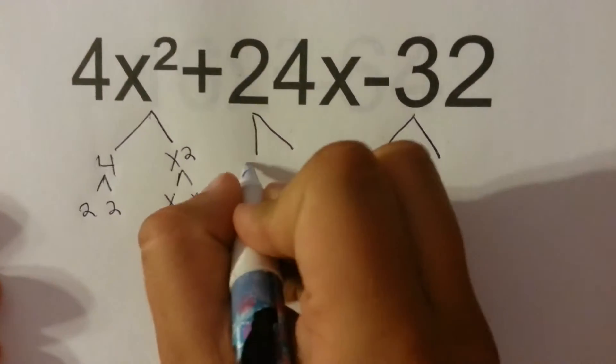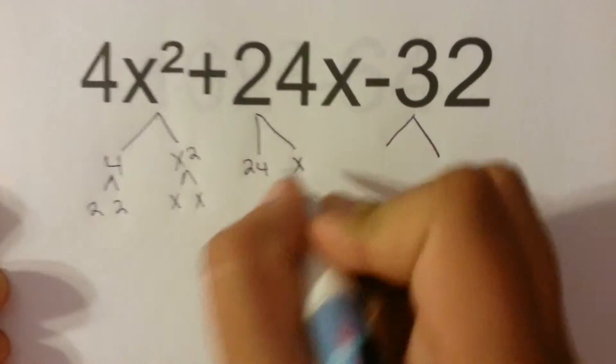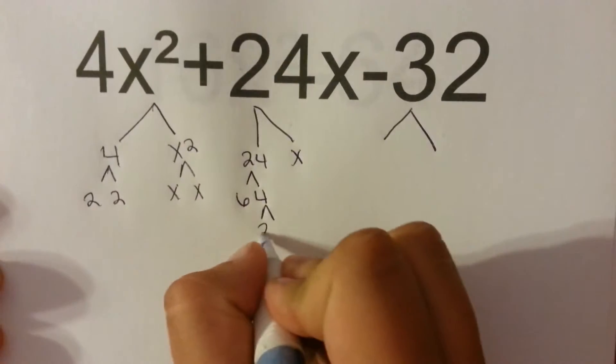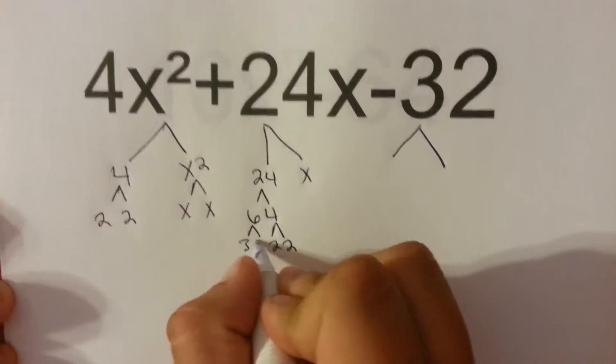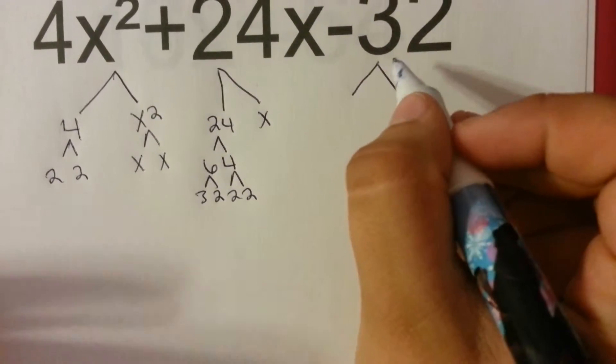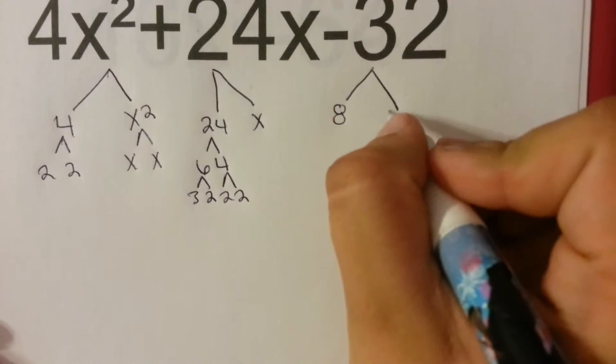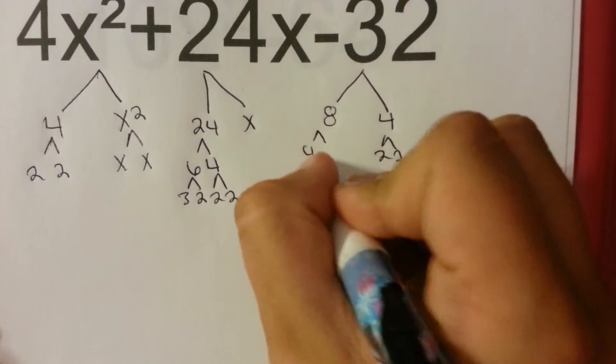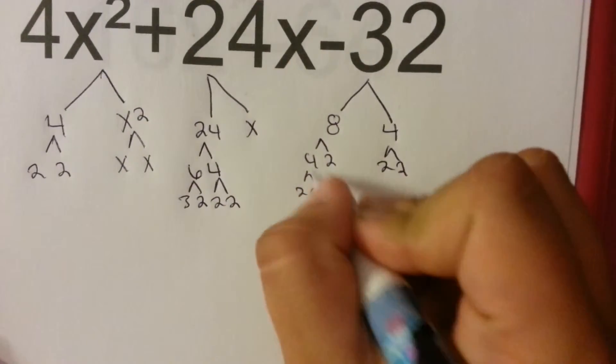And 24x, I can break this down to 24 and x, then I can break this down to 6 and 4, 2 and 2, 3 and 2. Then 32, I can break it down to 8 and 4, 2 and 2, 4 and 2, 2 and 2.